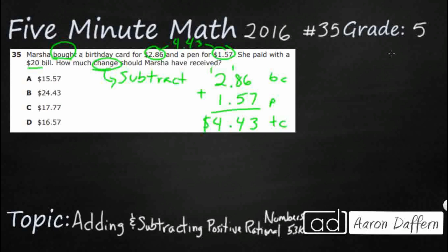Now we can subtract that — but this is where the difficulty comes. How do we line it up? I said we always line up the decimals, and I know where my decimal is in $4.43, but where is my decimal in $20? You will sometimes have to subtract or add numbers where only one of them has a decimal. Here's what you do: locate the ones place — the decimal always goes immediately to the right of the ones place. So I can place the decimal there, line up $4.43, and everything starts to line up.